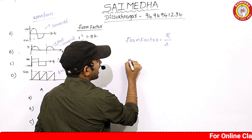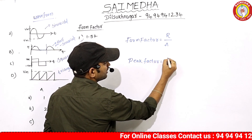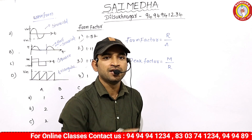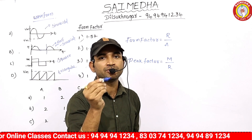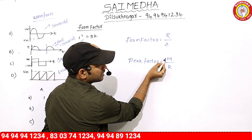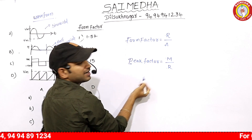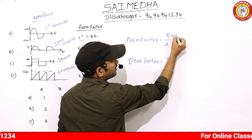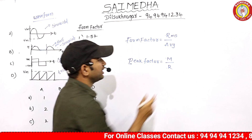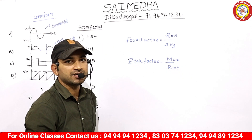Next is peak factor. Peak factor is the maximum (peak) value divided by RMS value. So RMS value divided by average value gives the form factor, and maximum value divided by RMS value gives the peak factor.